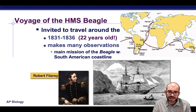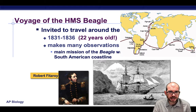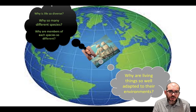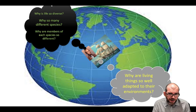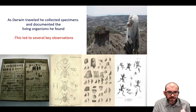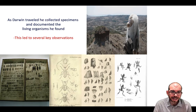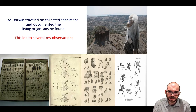During the voyage, he made many observations. It was particularly when traveling down the South American coastline and visiting islands off Ecuador called the Galapagos where he had his major breakthroughs. As he sailed, he wanted to answer questions like why is life so diverse, why are there so many different species, and why are living things so well adapted to their environments. He did what any good scientist would do — gathered evidence and documented everything. He drew sketches of every geological and living thing he encountered and captured many specimens and mailed them back to England.